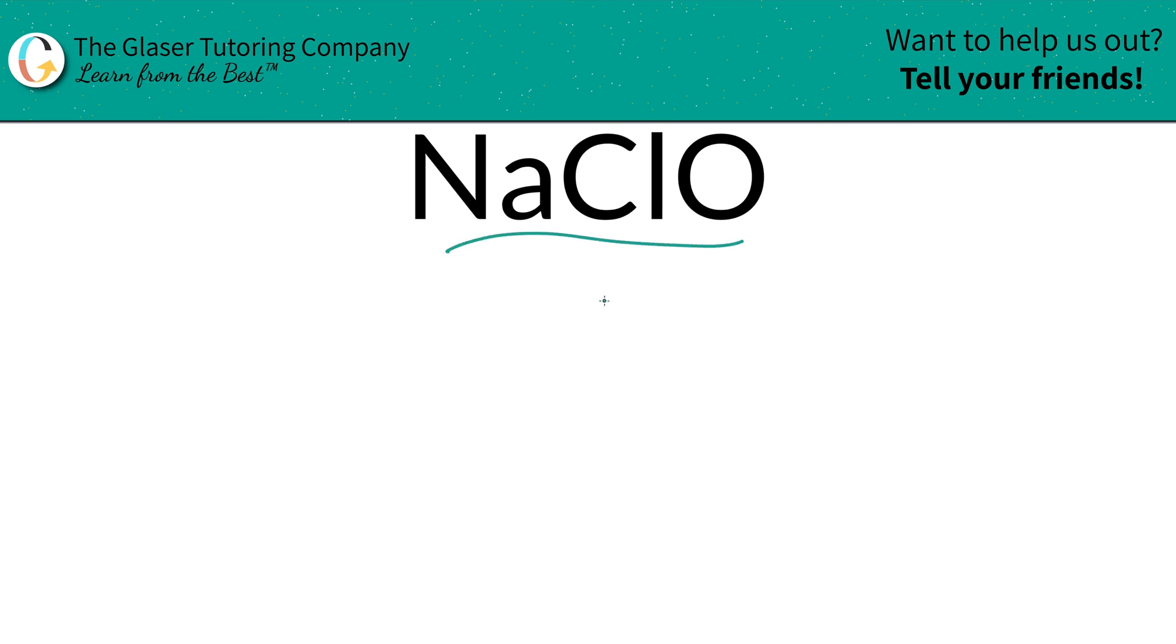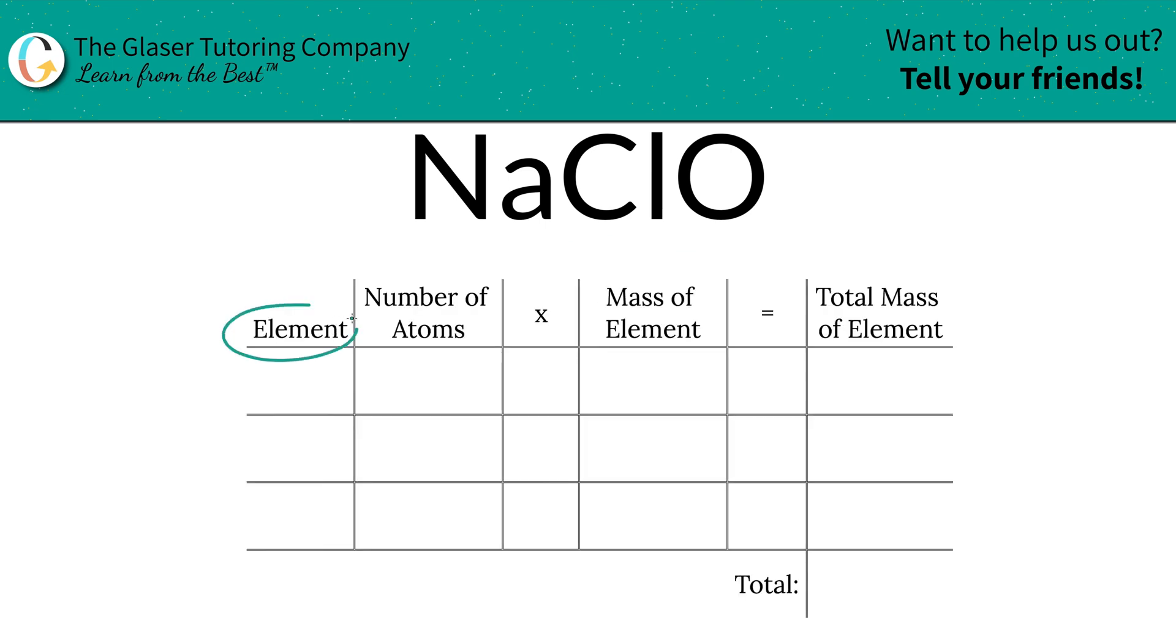I've created a nice little table to help us out. Take a look. Bam. So the first thing is we're going to write the elements we see. So we've got sodium, we've got chlorine, we've got oxygen.